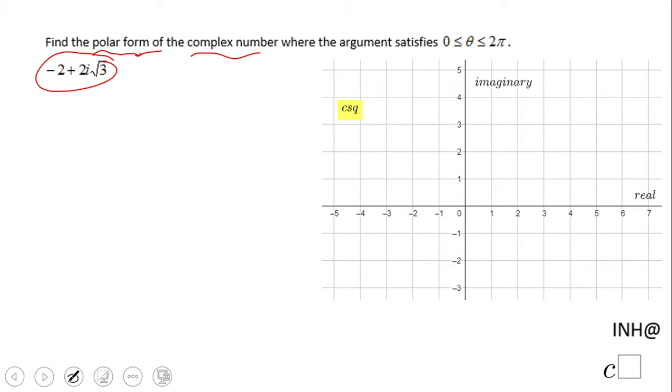So that point, that complex number which I'm gonna call it Z, is negative 2 plus 2i square root of 3. That means I'm gonna go from this origin to left because you have negative 2, and 2 square root of 3 is somewhere here. So this is the point negative 2 plus 2i square root of 3.